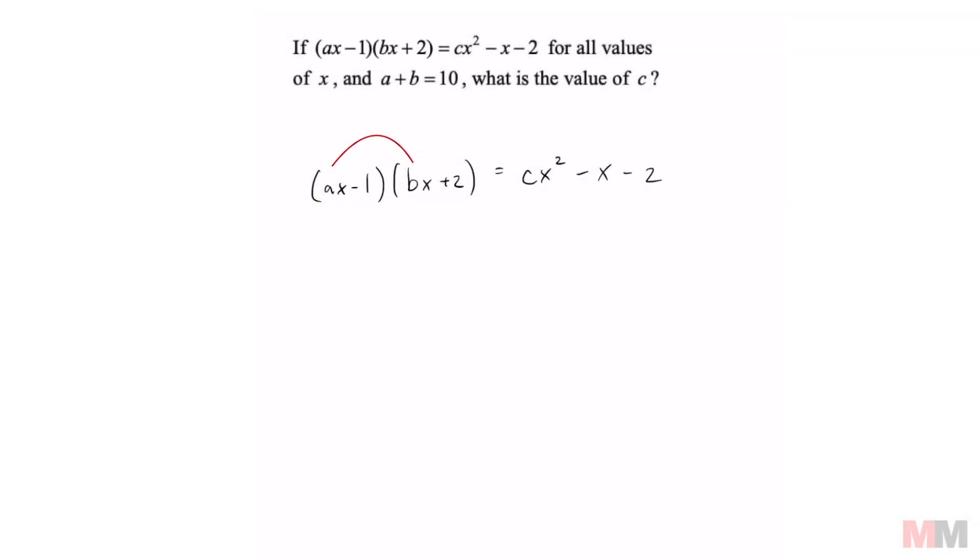ax times bx is just going to be abx². Then we do ax times 2, positive 2ax. Negative 1 times bx is negative 1bx, and negative 1 times 2 is negative 2.